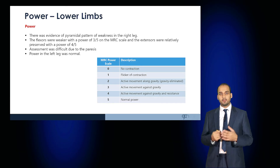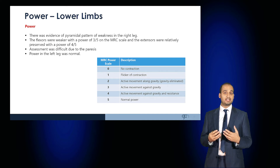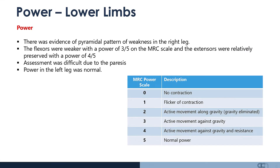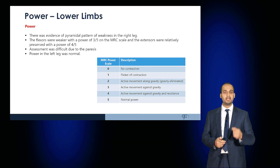In the lower limbs with a pyramidal pattern of weakness, the flexors are weaker than the extensors. You would expect the flexors to have a power of three out of five and the extensors four out of five on the MRC scale. The contralateral leg, if not affected, would have normal power.